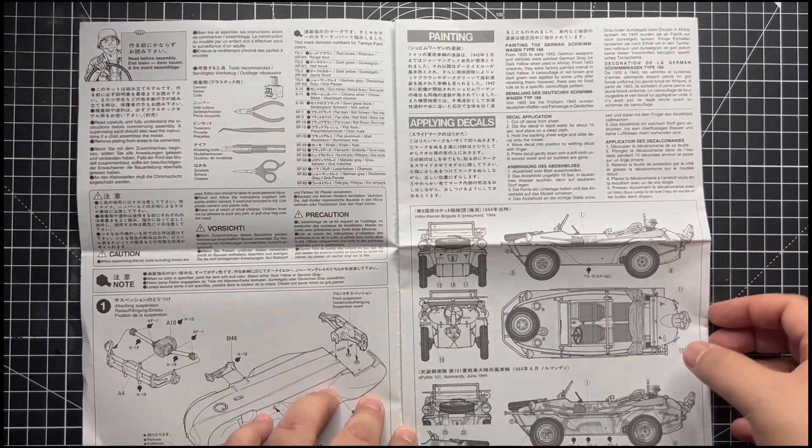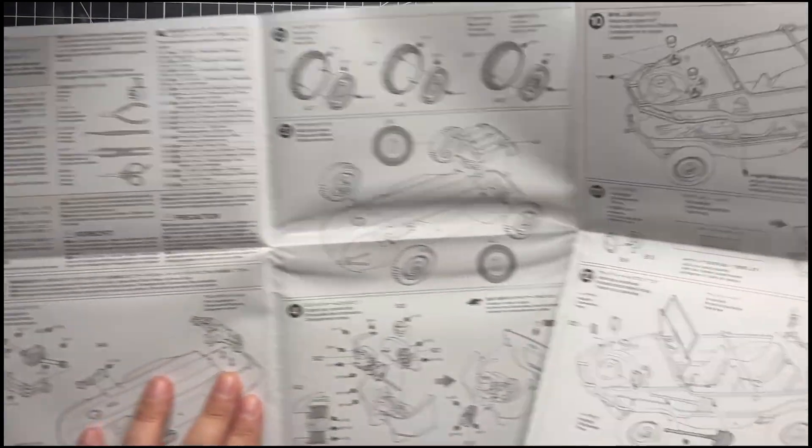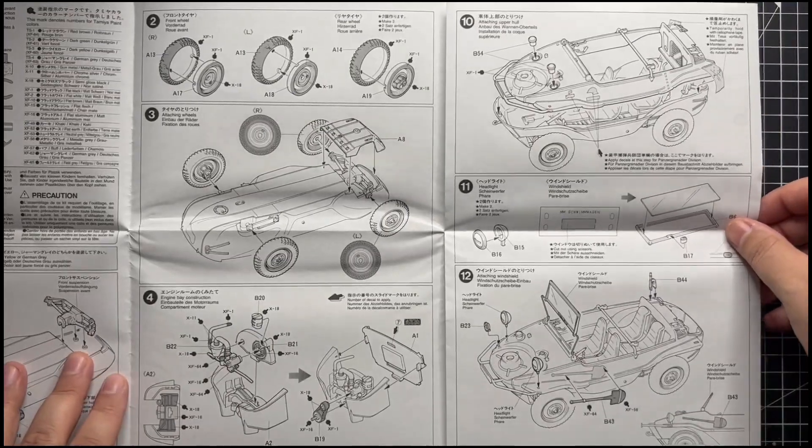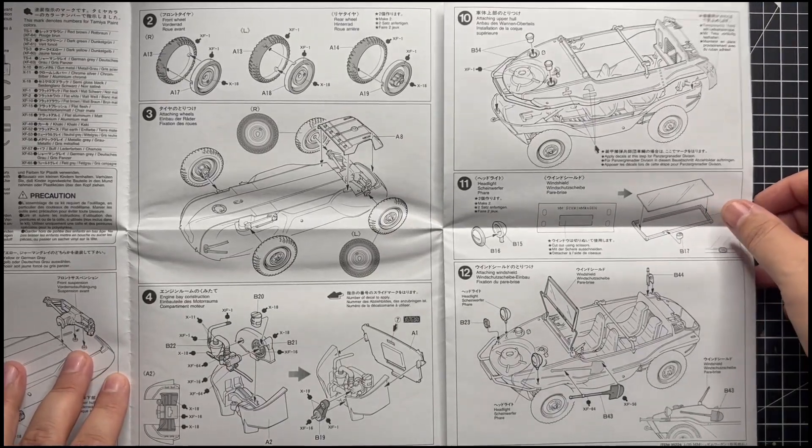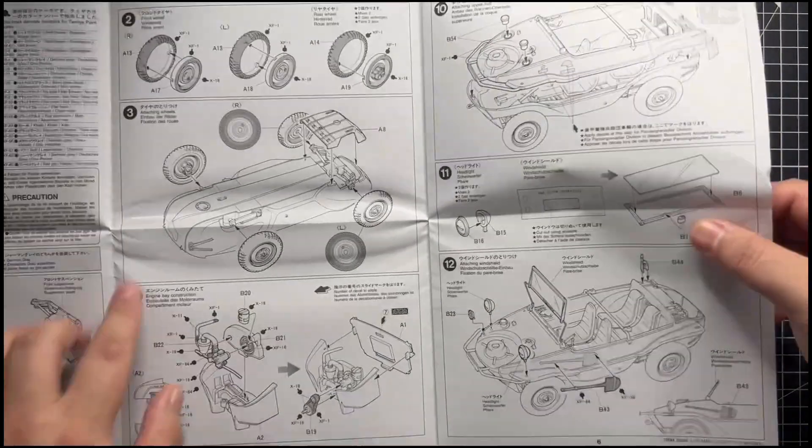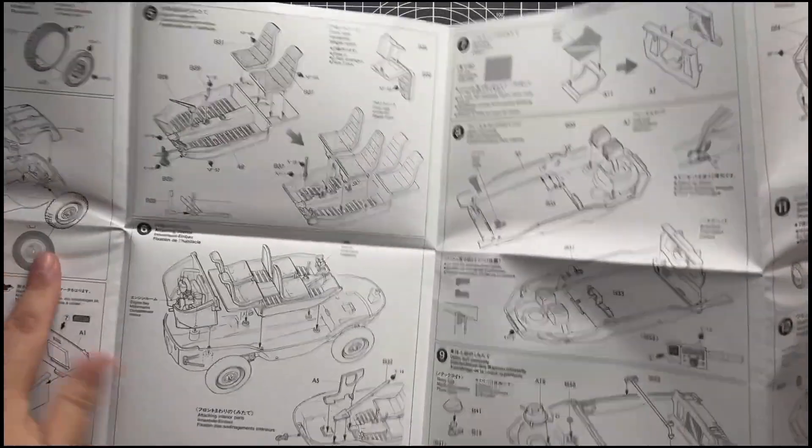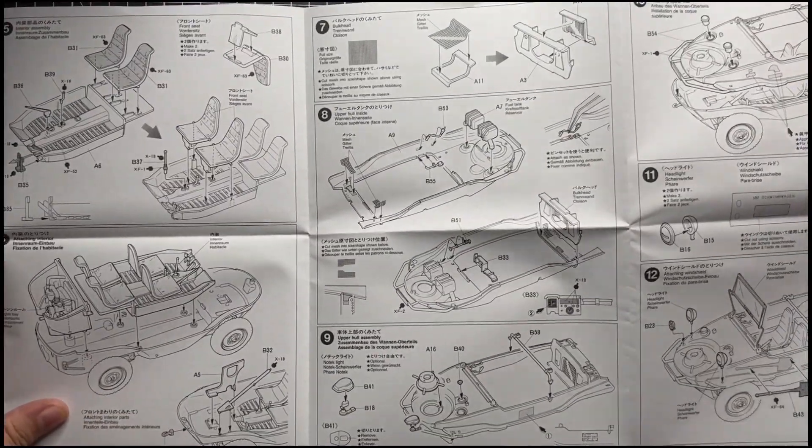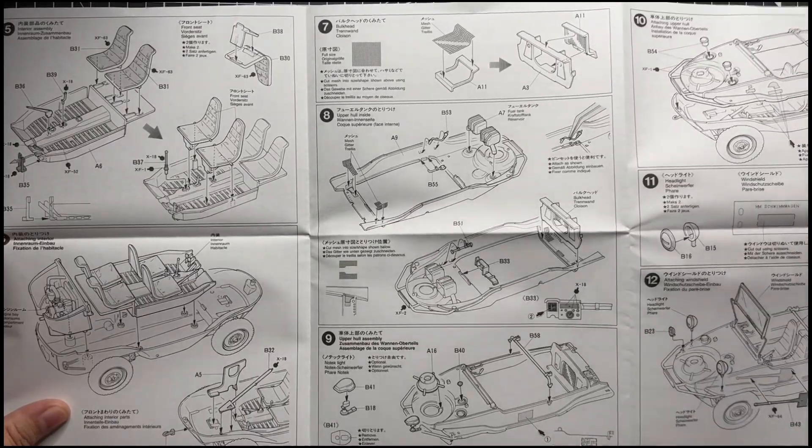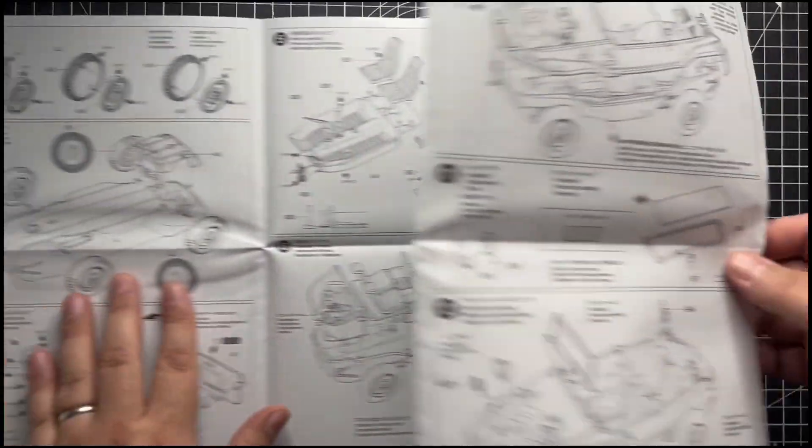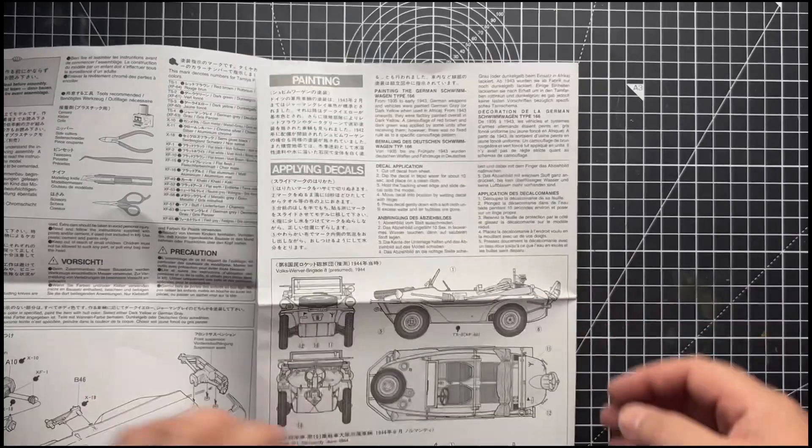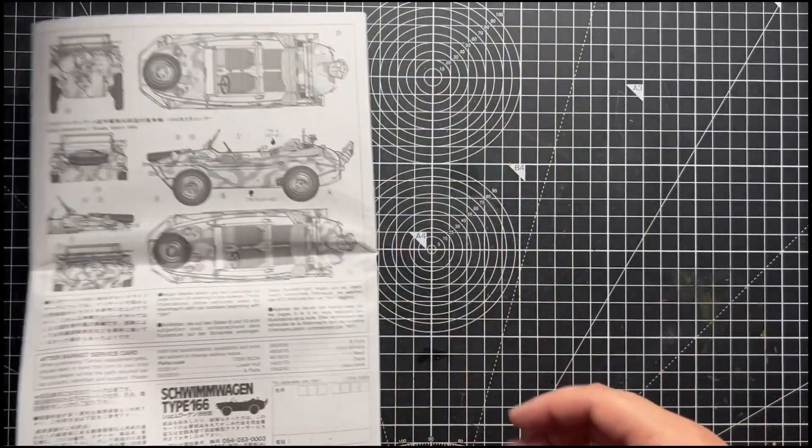As we move through the booklet, these instructions are completely opposite to the Accurate Armor ones we looked at in the last video in that rather than just having a lot of words, these have very nice clear diagrams with exploded views which show how things fit together, where they go, which parts need to be modified, which parts need to be glued, which parts don't, and also options for different variants. On the back we also have a nice diagram of potential paint schemes.